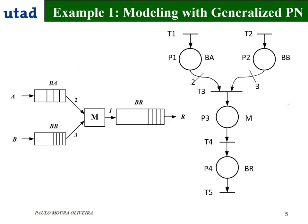I am going to provide a solution and explain it step by step. T1 is a source transition and T2 is a source transition as well. When we fire T1, it means one part A enters buffer A. P1 models buffer A and P2 models buffer B. We need two parts from buffer A and three parts from buffer B to be assembled in machine M. After the machine finishes, part R is moved to buffer R, modeled by P4. Then we have a sink transition representing the part leaving the system.